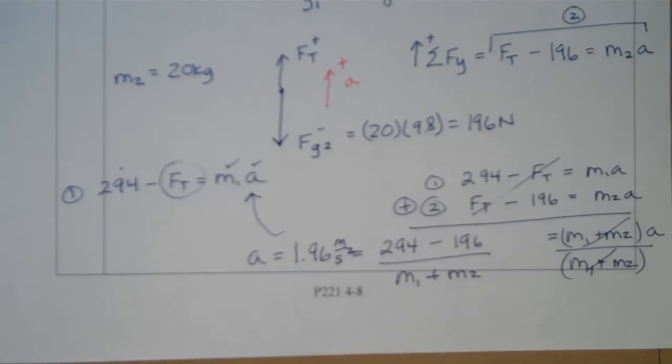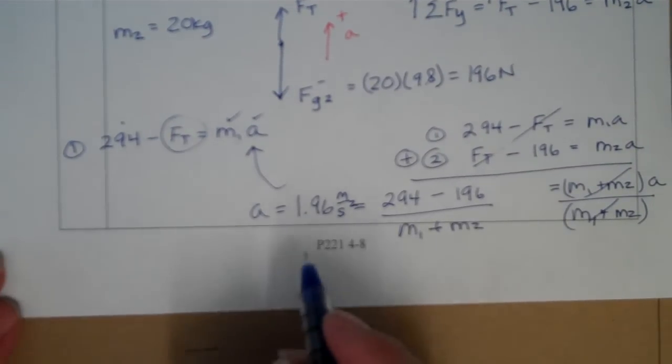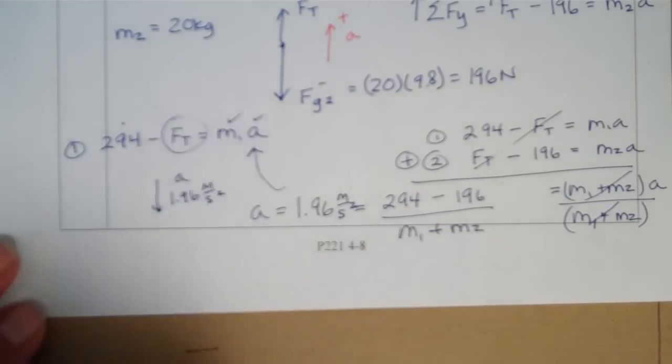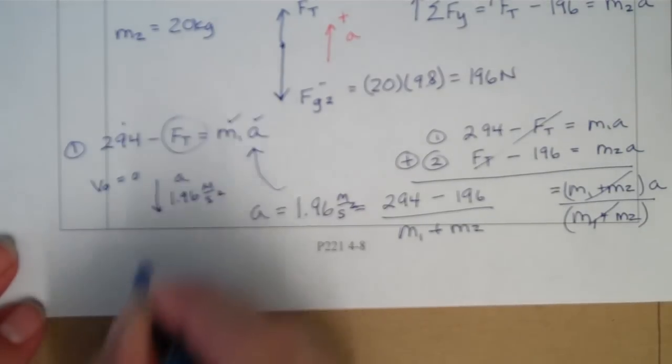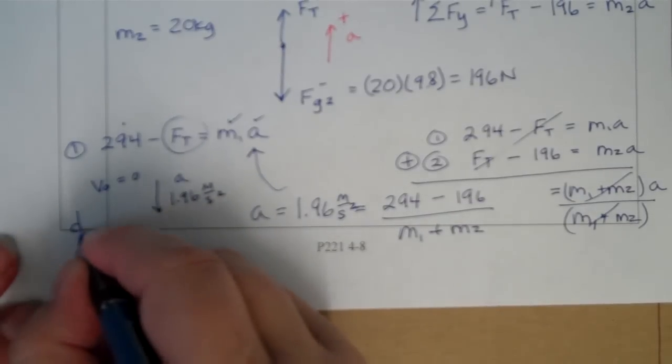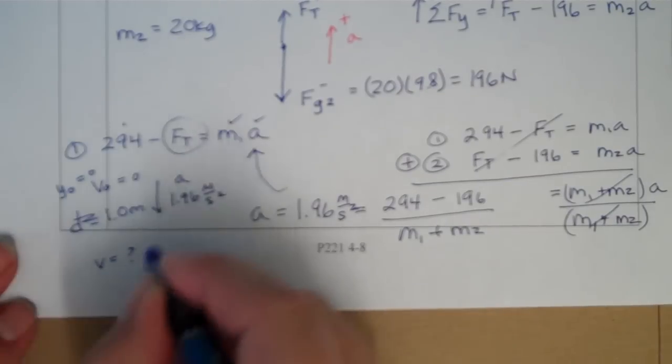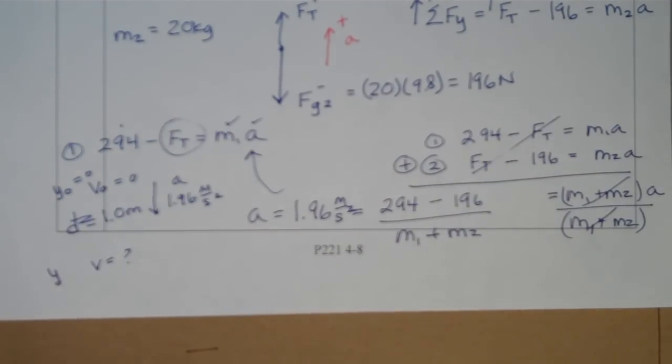Now the problem did ask, if it starts from rest 1 meter above the ground, what is its speed when it hits the ground? We now do a little kinematics problem. We know our acceleration is downward at 1.96 meters per second squared. We know our initial velocity was zero. Final velocity is what we're looking for, but we know the distance here is 1.0 meters, or we could say that we start at the origin and we go down 1 meter. So try the kinematics problem, set up kinematics, see if you can solve for what the velocity is when it hits the ground now, knowing the acceleration, initial position, initial velocity, final position, and we don't know anything about time, but I bet that last third equation will solve it for you.